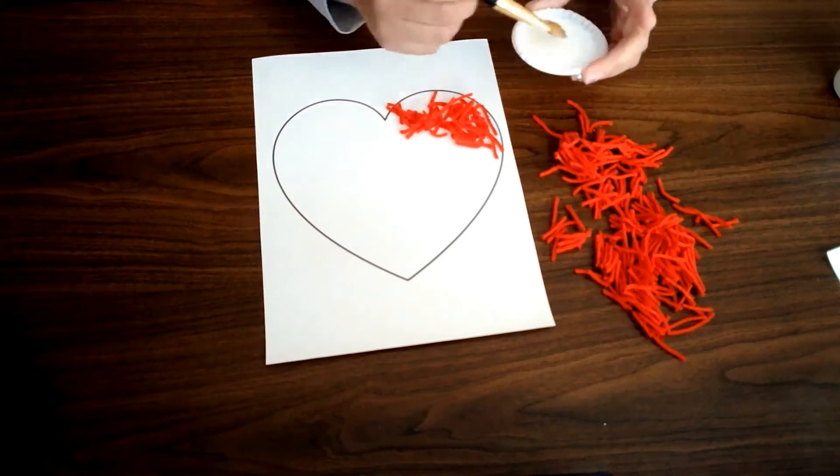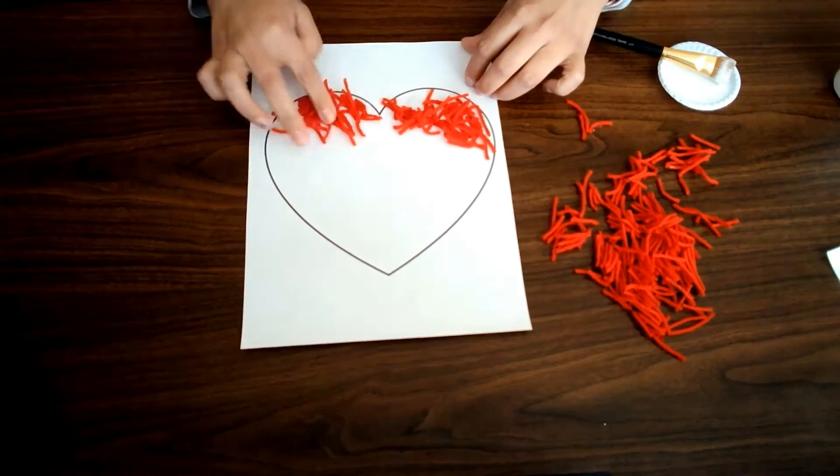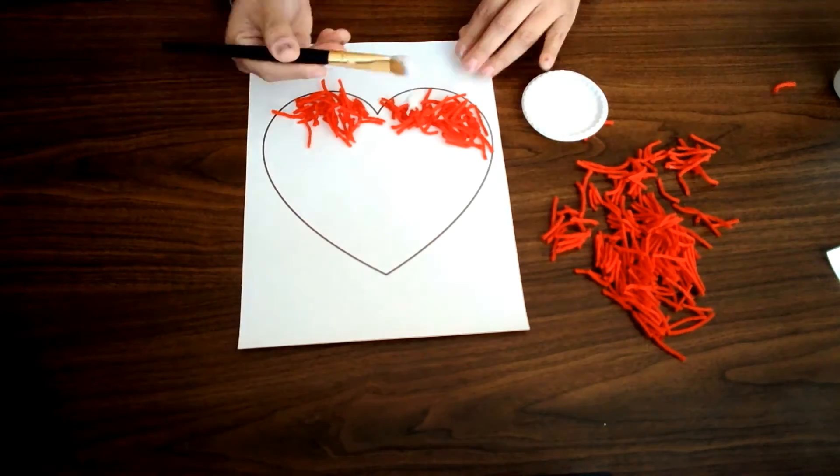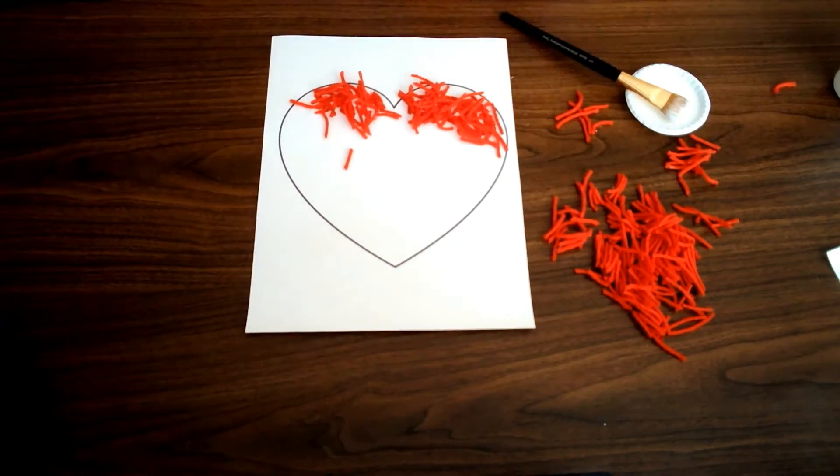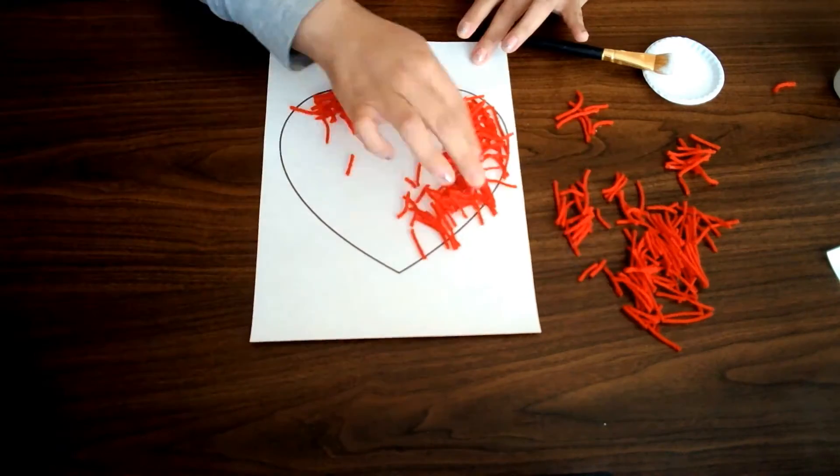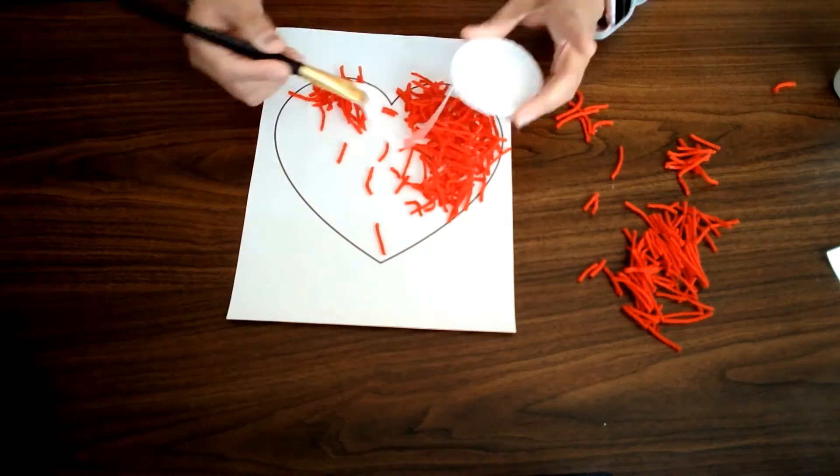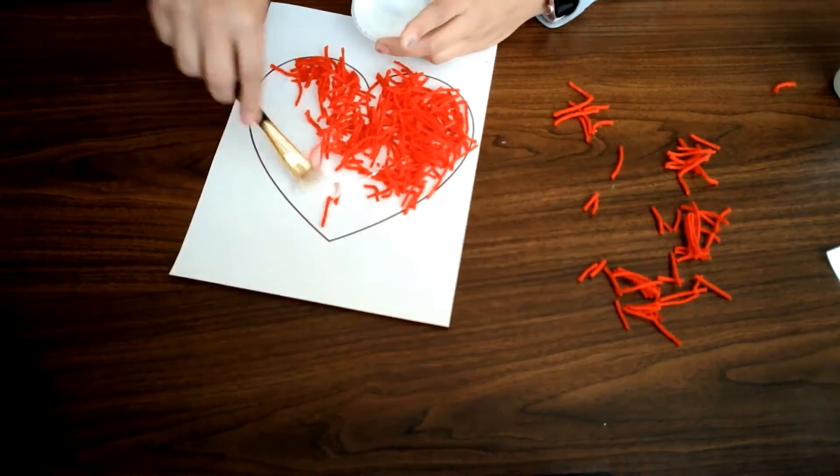Next step, I'm going to place some glue inside the heart and begin to place the pieces of red yarn. I'm going to continue to put the red yarn inside the heart and add glue as needed.